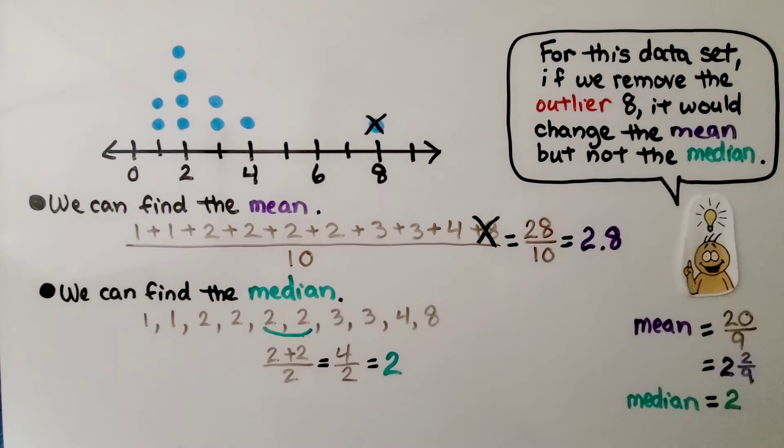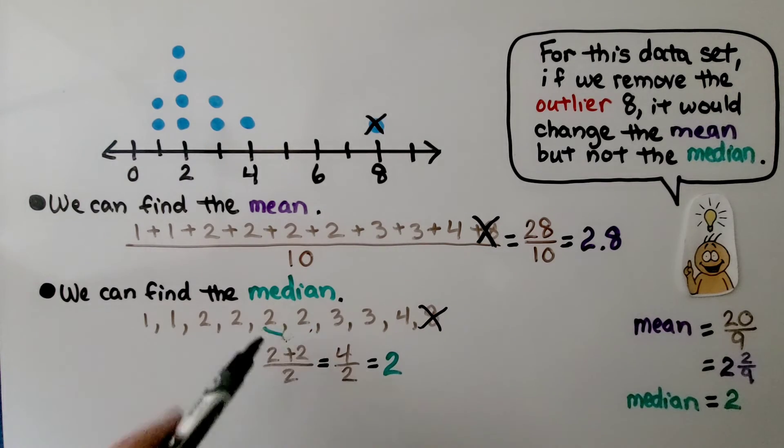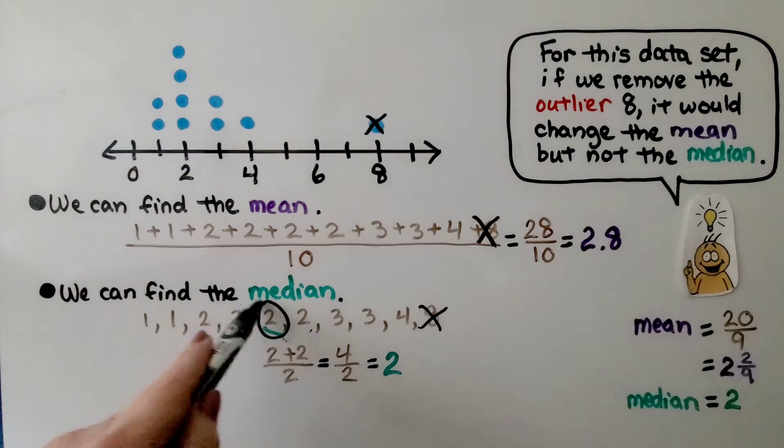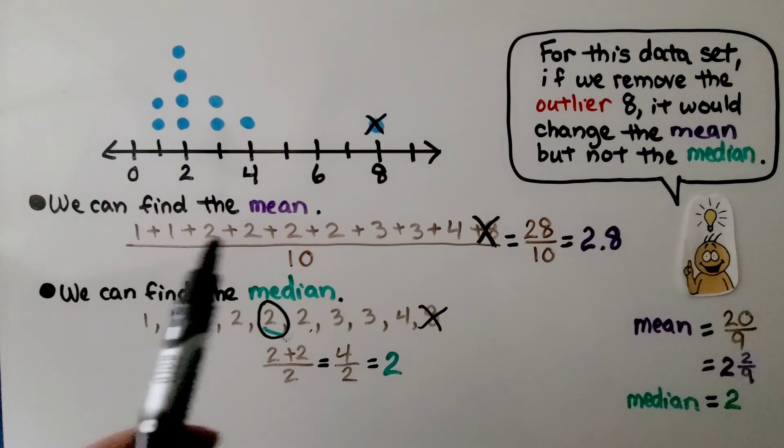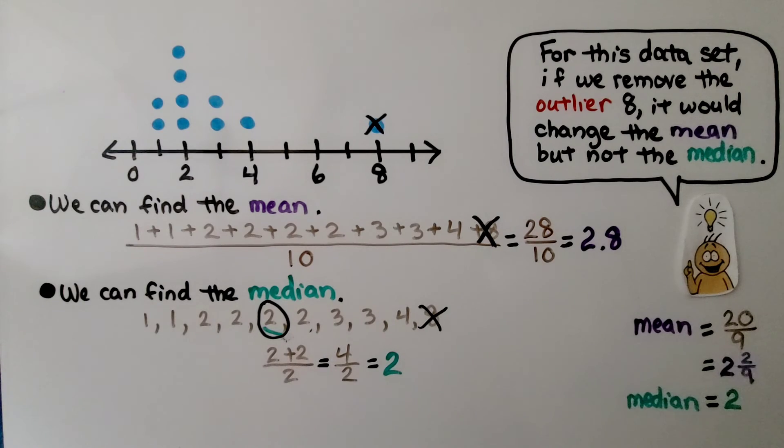But the median, because we had an even number of data values here, if we took this 8 away, well then we wouldn't have to add these. We would just have this, 2, as our median. So that wouldn't change. The only way to know for sure is to actually figure out the mean and the median to see if it changed.